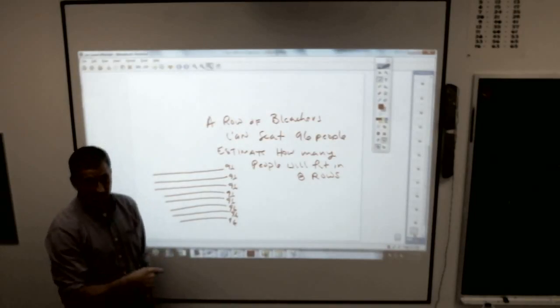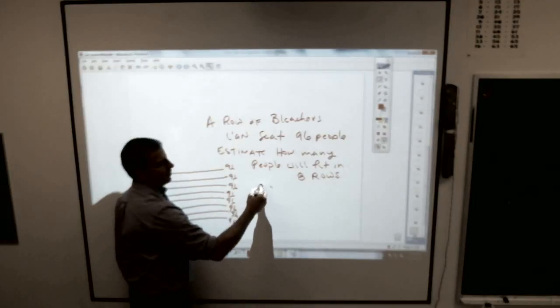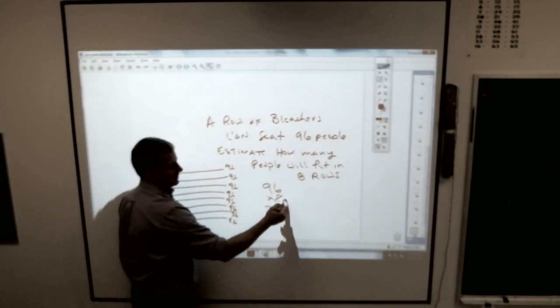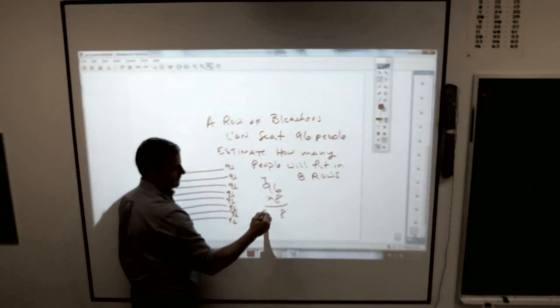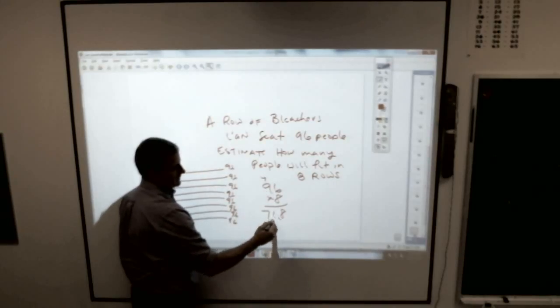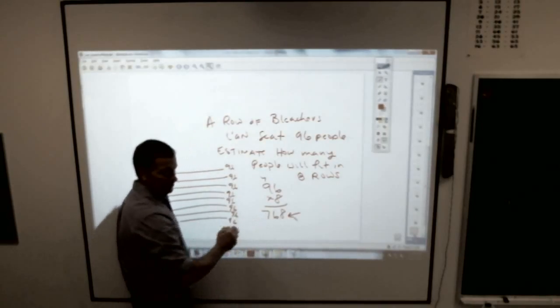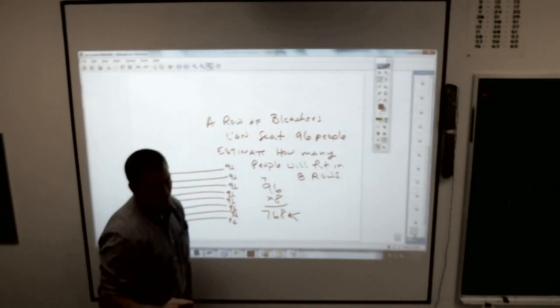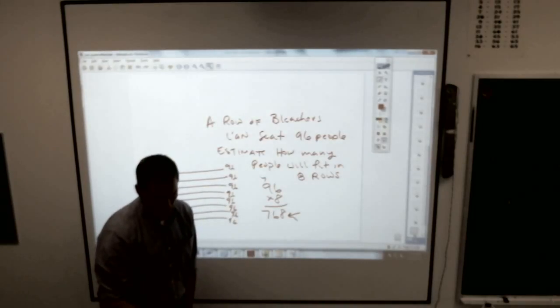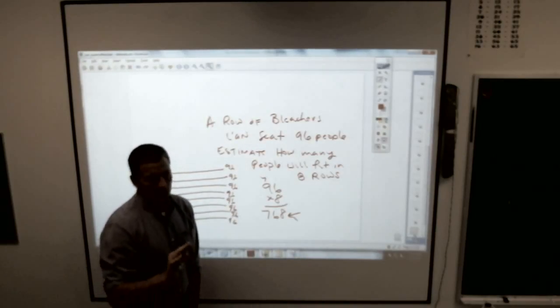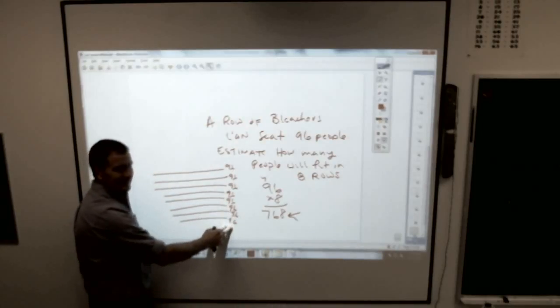Sometimes I see kids actually do this. They'll go, well, 96 times eight, they will get a number like 768, and then they'll round the answer. That's not what you want because you had to do a lot of work there.